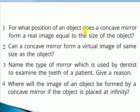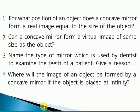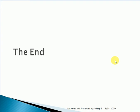Practice questions: For what position of an object does a concave mirror form a real image equal in size to the object? Can a concave mirror form a virtual image of the same size as the object? Name the type of mirror used by dentists to examine a patient's teeth and give the reason. Where will the image of an object be formed by a concave mirror if the object is placed at infinity? Also — you can write the answer in the comments — what is the minimum distance between the object and the image formed by a concave mirror? That's it for today; post any doubts in the comment section. Until next time, stay safe. Thank you.